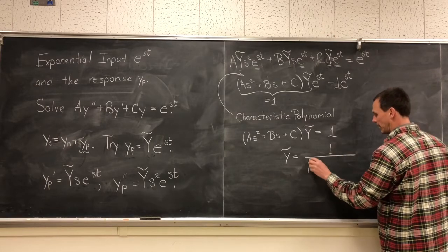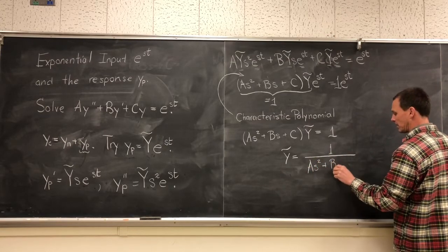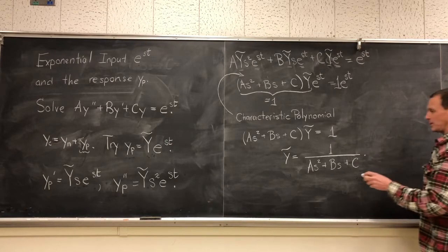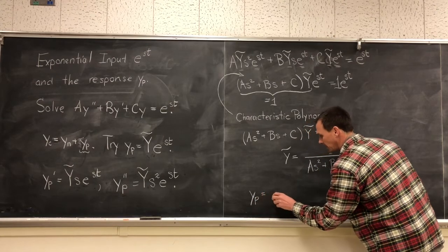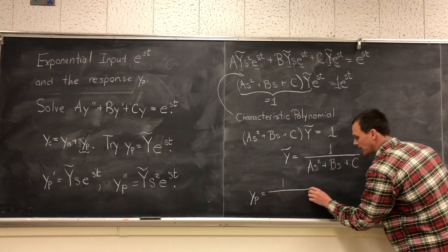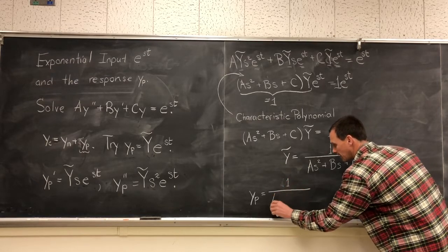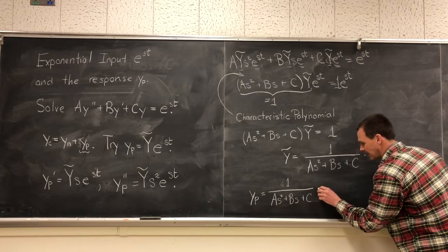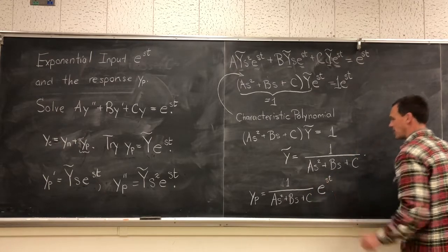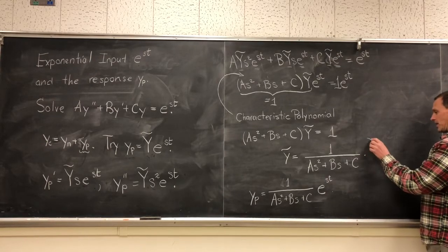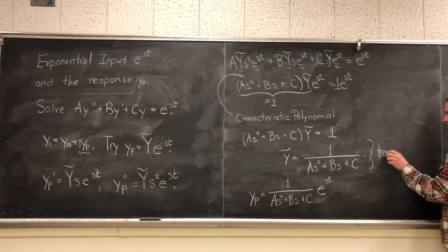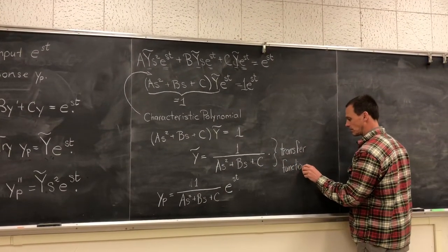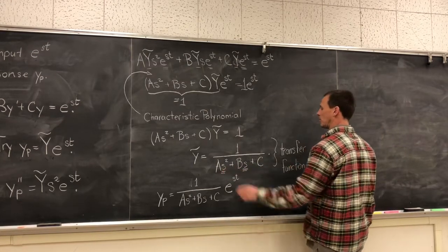And there we have our y particular in general. We found the formula is very simply y tilde times—Y tilde is one over (a s squared + b times s + c)—times e to the st. This piece right here, Y tilde, we call this the transfer function. And it's a function in the variable of s, and we'll take a look at that in a moment.